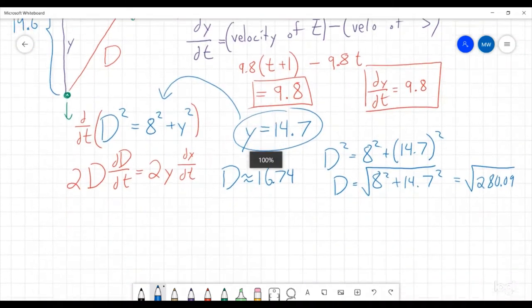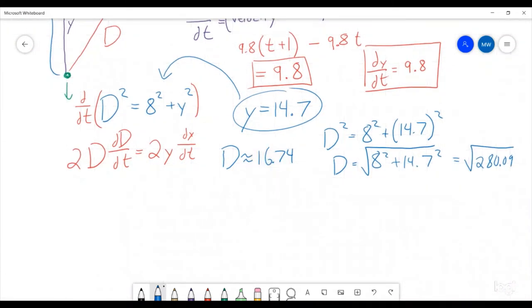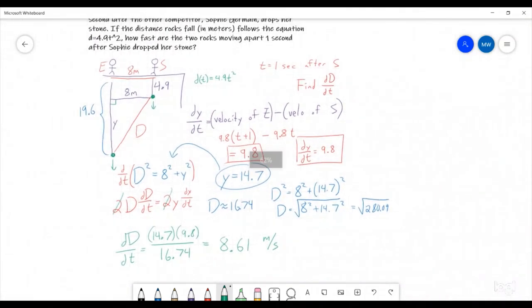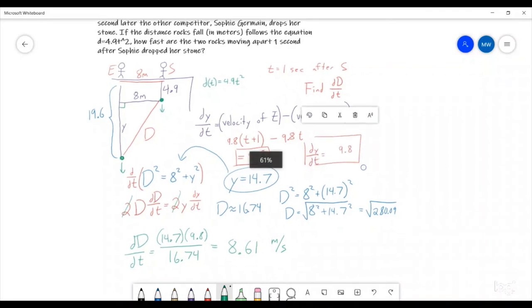Okay, so we take all of those pieces together and we can plug them all in. We can actually cancel a little bit so that 2 and that 2 will cancel. So we get dD/dt = y × 14.7 × dy/dt × 9.8 divided by big d × 16.74. We go ahead and calculate all of that out. So we get 14.7 times 9.8 divided by 16.74 and we get 8.61 meters per second. That is how fast the two rocks are moving apart one second after Sophie dropped her stone.